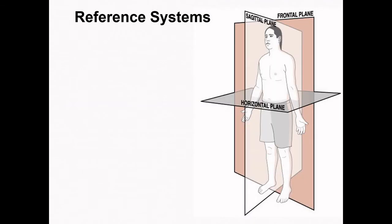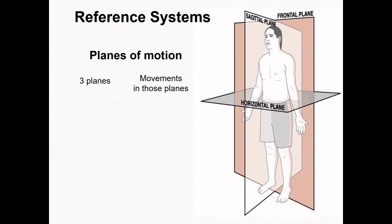The next foundational concept to consider is that of a reference system. You can't talk sensibly about kinematics or kinetics without having a reference system. The commonly used reference frame in biomechanics identifies three cardinal planes — the word cardinal here means of the greatest importance. These planes are defined relative to a person standing in the anatomic position: the horizontal plane, the frontal plane, and the sagittal plane. When we start talking about gait patterns later in the semester, we will spend much of our time focused on the sagittal plane, looking at kinematics or movements in that plane when viewed from the side.